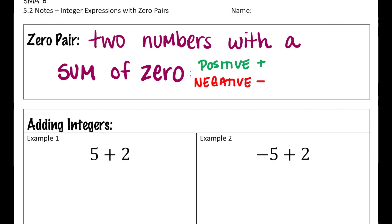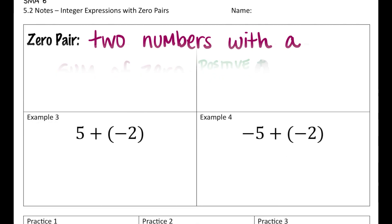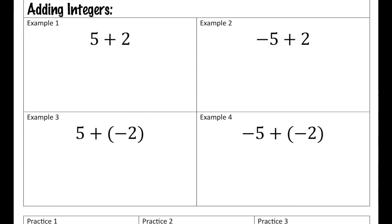Now here's the deal with the zero pair: every time we have one positive and one negative, those added together will always equal zero. So we're going to put a zero through them to represent that as a zero pair. When we're adding integers together, we're going to use what I like to call counters, or sometimes they're called tiles. We're going to count how many positives and how many negatives we have based on the numbers in the expression.